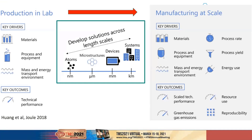At a high level, as researchers we're trained to develop new technologies with the aim of optimizing a fairly narrow set of performance metrics — such as a particular technical performance — without regard to manufacturing scalability. I think this is particularly acute in material science. Chemical engineers tend to think about scaling and process, and mechanical engineers tend to think from a device and product perspective, but as material scientists we need to think about metrics like energy, transport, process yields at scale, and optimize around sustainability in terms of resource use and greenhouse gas emissions.